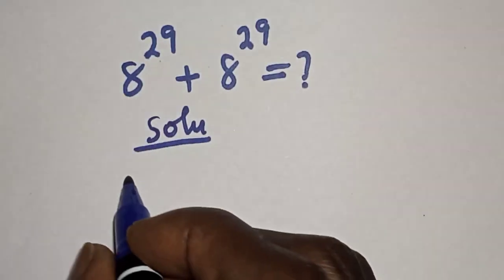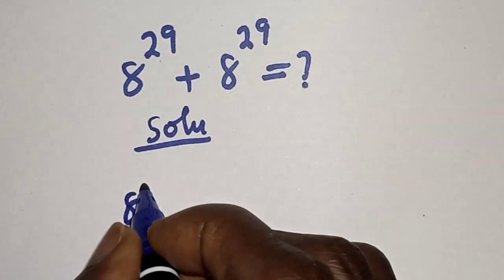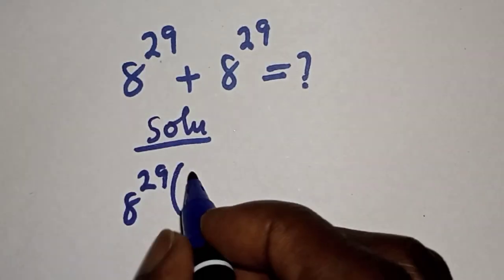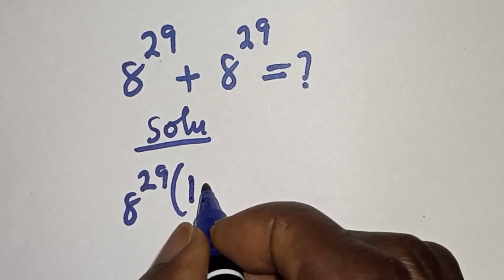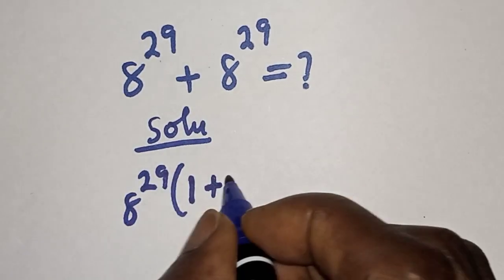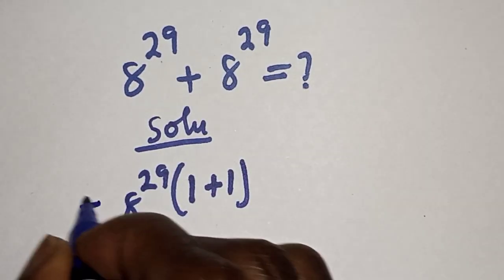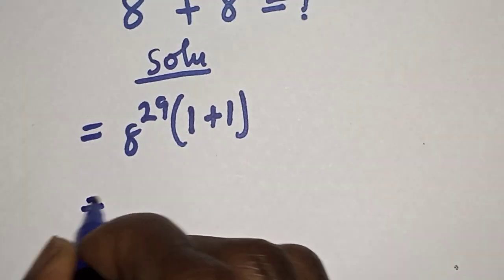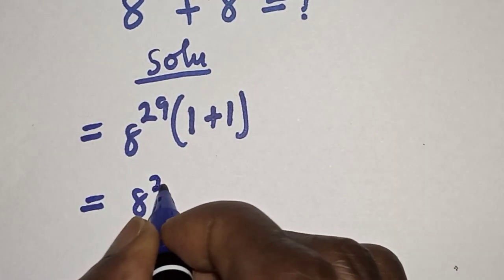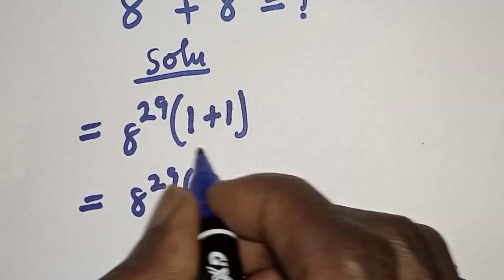8 raised to power 29 is common, let's bring it out. We have 8 raised to power 29 in brackets, this divided by this one plus this divided by this one. Then this is equal to 8 raised to power 29 in brackets, 1 plus 1, which equals 2.